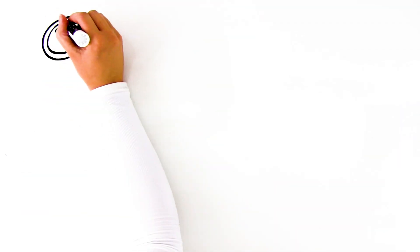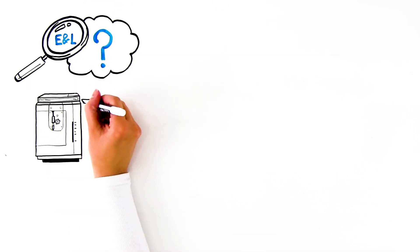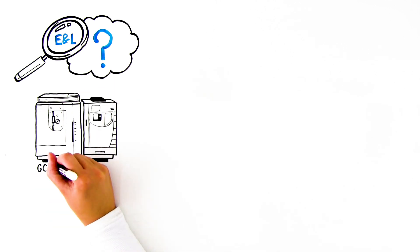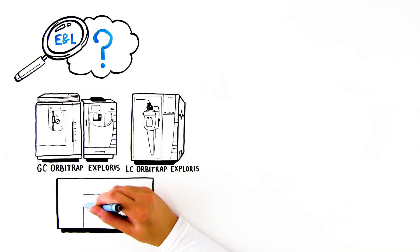The first challenge of E&L analysis is being able to confidently identify unknowns. High-resolution mass spectrometers such as the GC Orbitrap Explorys, LC Orbitrap Explorys, and Orbitrap IQX,